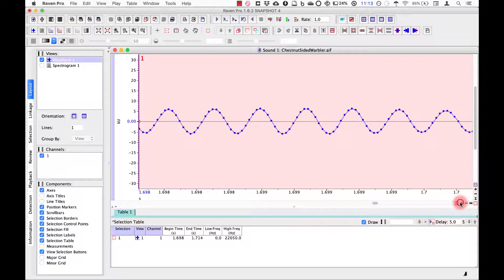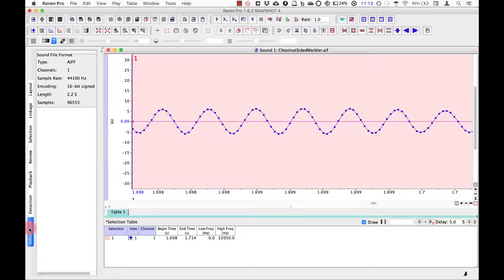The interval between samples is delta T, the inverse of the sample rate for this file. To find out what the sample rate is, I can click on the Information tab of the side panel here. Here, Raven tells us that the sample rate for this file is 44,100 Hz, or samples per second.